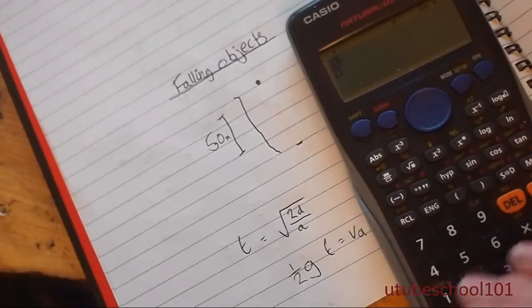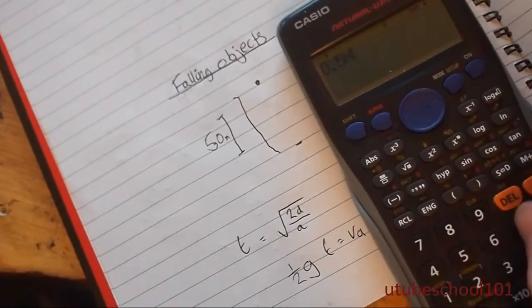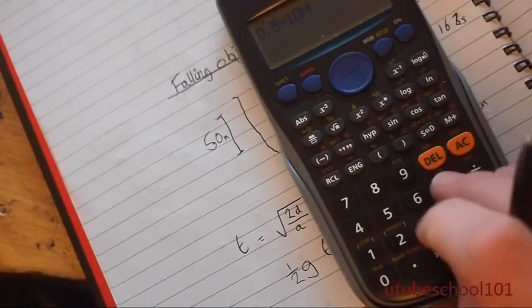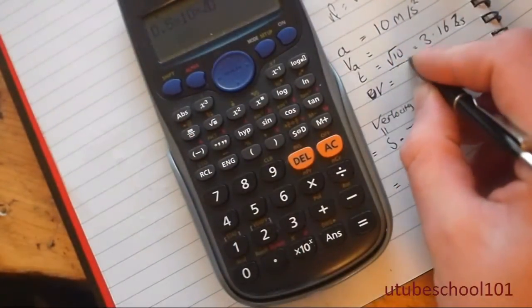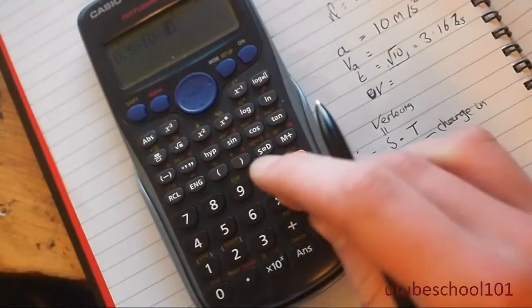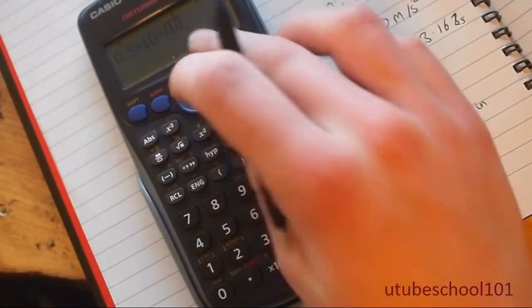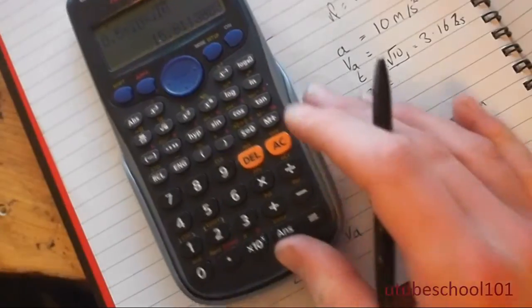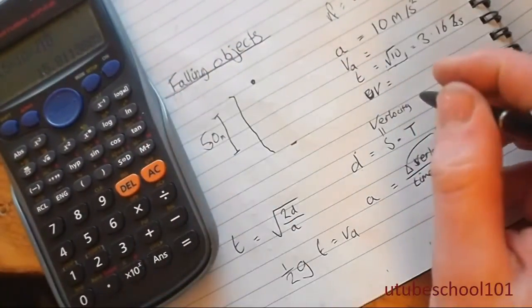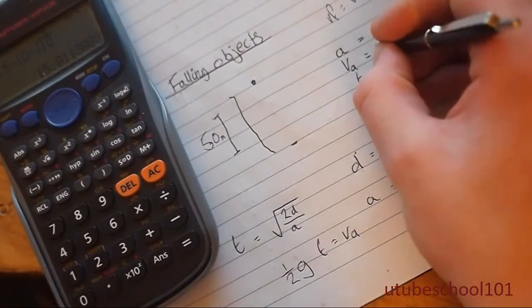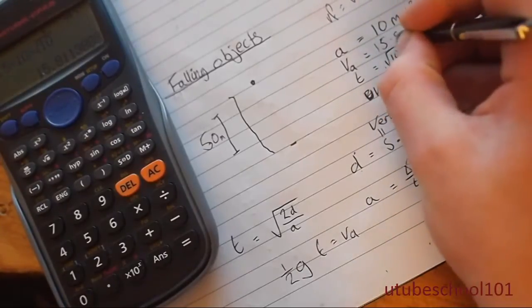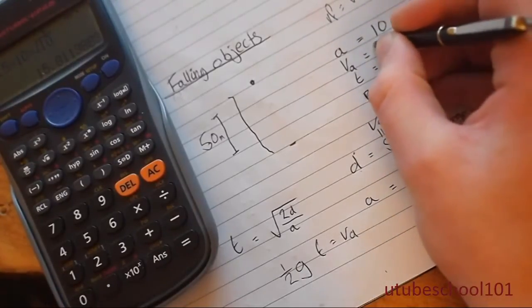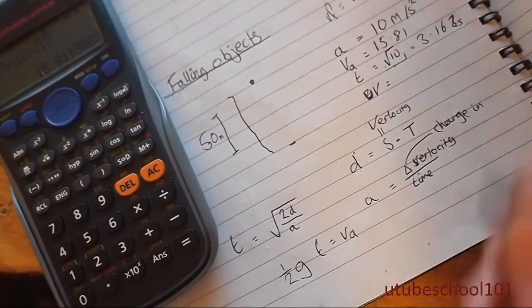In the average velocity, you can use the equation half gt equals vA. So if we do half, or 0.5 times 10. Notice what I've done there, kept note of the square root formation just so I get more accurate answers. So the average velocity is going to be 15.81 meters per second.